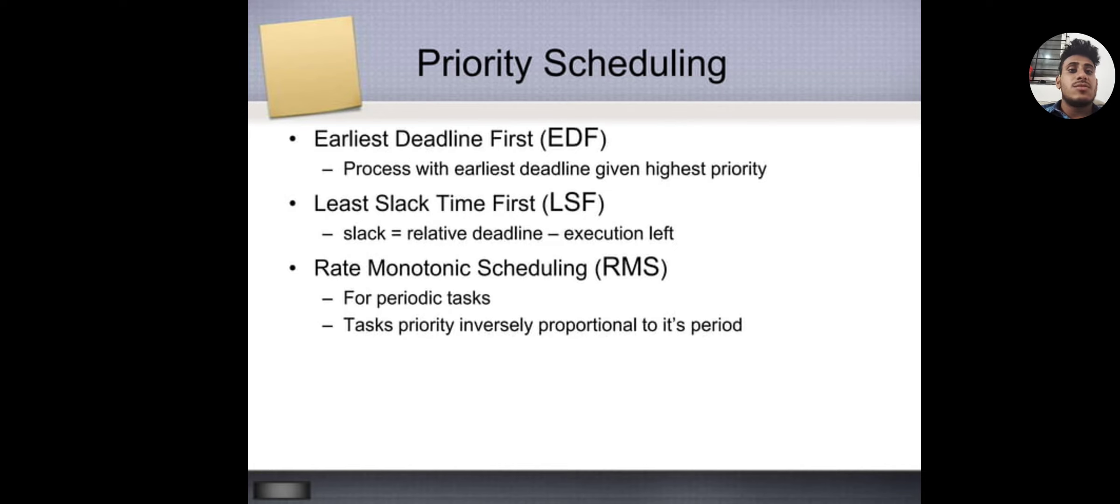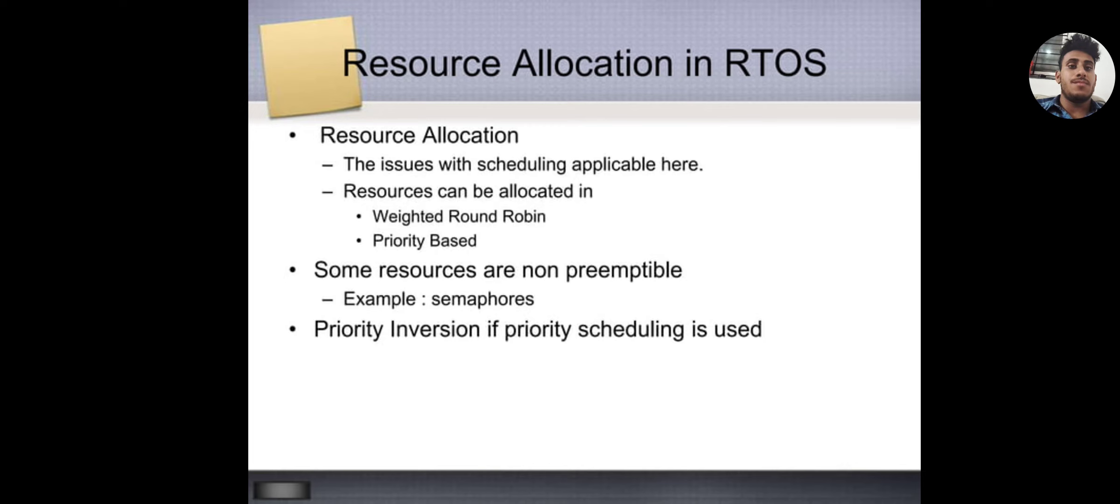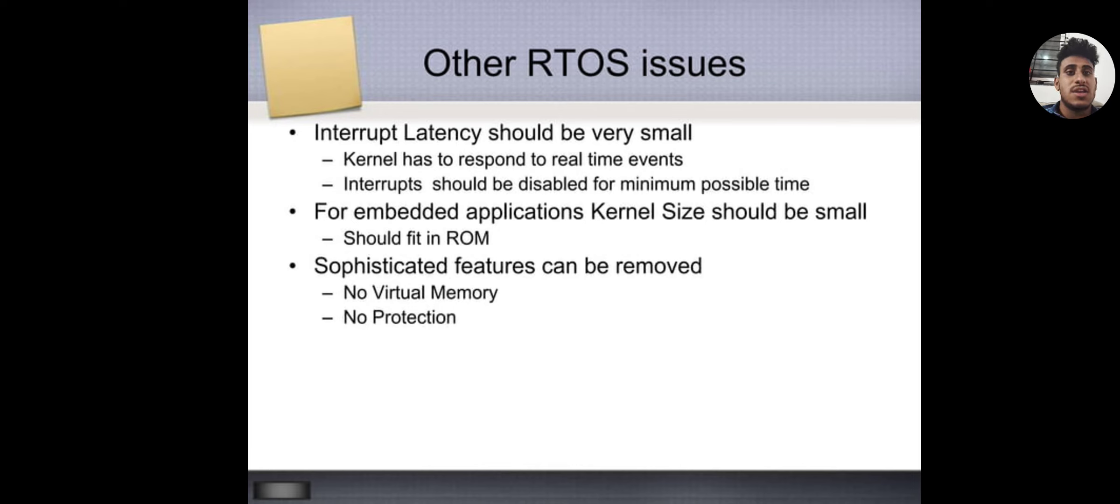Resource allocation in RTOS: The issues with scheduling are applicable here. Resources can be allocated in weighted round-robin and priority-based. Some resources are non-preemptable. Priority inversion if priority scheduling is used. Other RTOS issues: Interrupt latencies should be very simple. Kernel has to respond to real-time events. Interrupts should be disabled for minimal possible time. For embedded applications, kernel size should be small, should fit in ROM. Sophisticated features can be removed. No virtual memory and no protection.